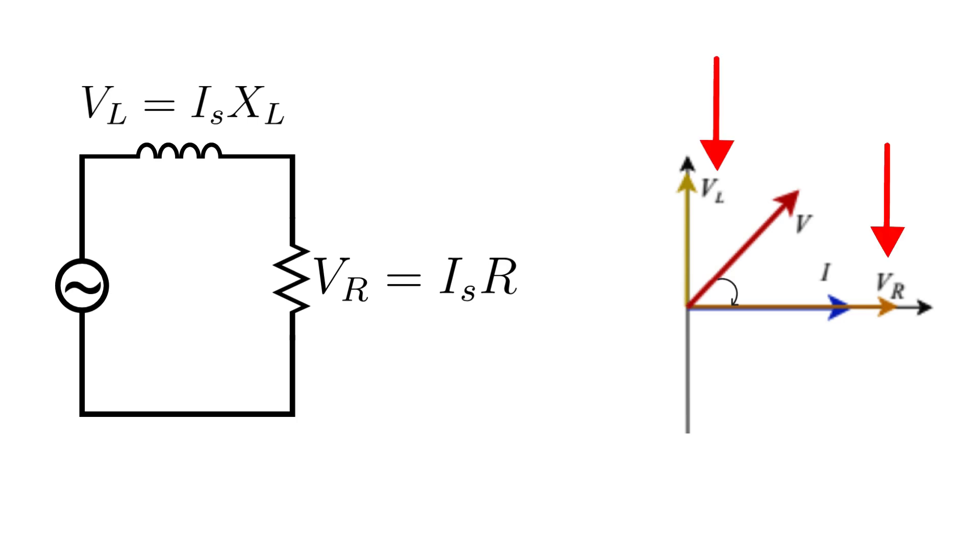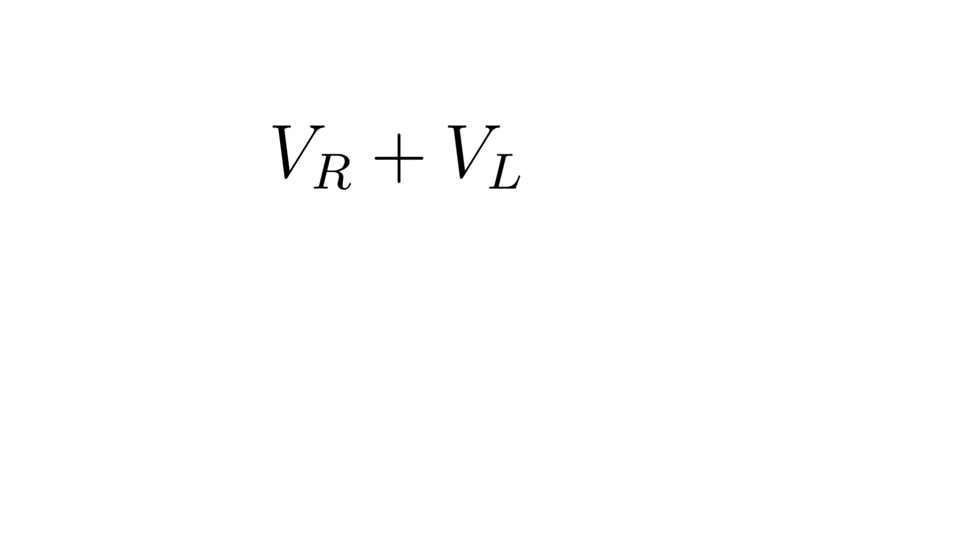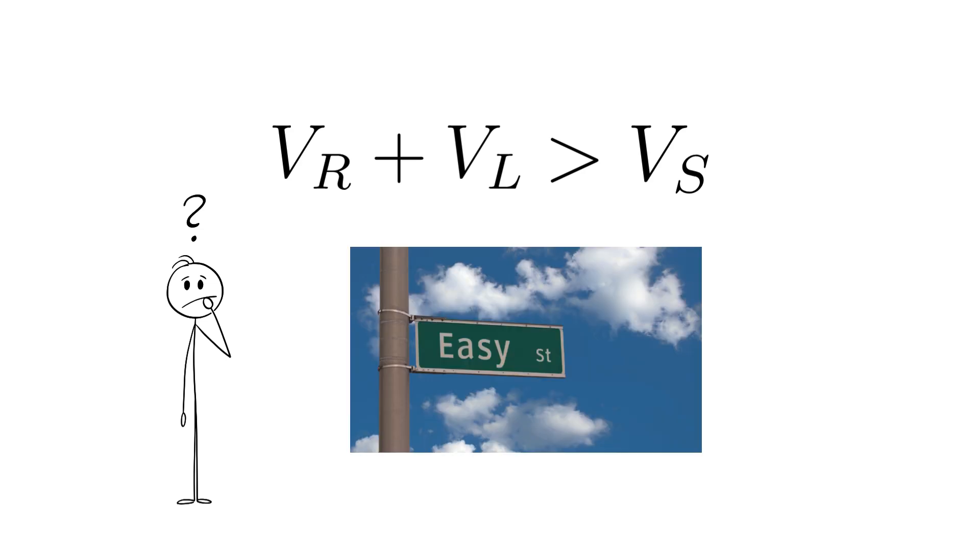Because current in the circuit lags behind the source voltage, the calculated voltages are also phase shifted relative to the supply voltage. This means that the sum of the voltage values that you obtain will likely exceed the supply voltage. This seems like a violation of the conservation of energy, but the anomaly can be explained easily.